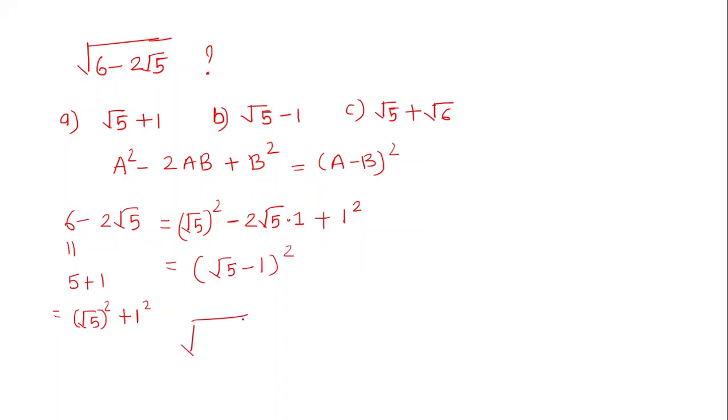Now we check √(6 - 2√5), and that will be the square root of (√5 - 1)², which equals √5 - 1.